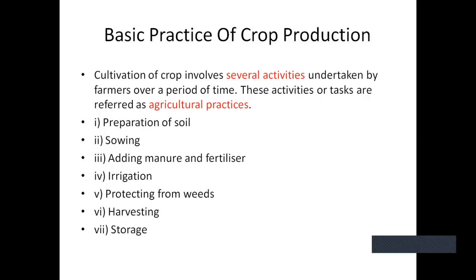The first activity is preparation of soil. He has to prepare his soil properly by plowing and tilling. The next is sowing — he has to select proper seeds and sow them properly. Next, the third step is adding manure and fertilizer. Once he sows a seed, the seeds should grow healthier, and for that he has to add manure and fertilizer. Then he needs to water the plants, or irrigate his land — that is irrigation.